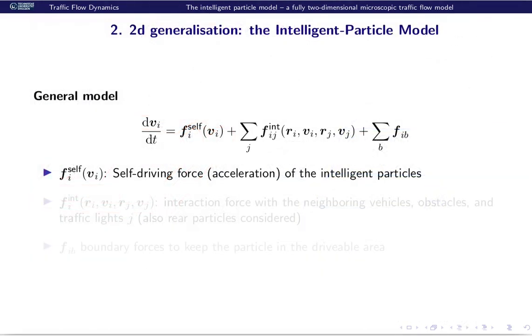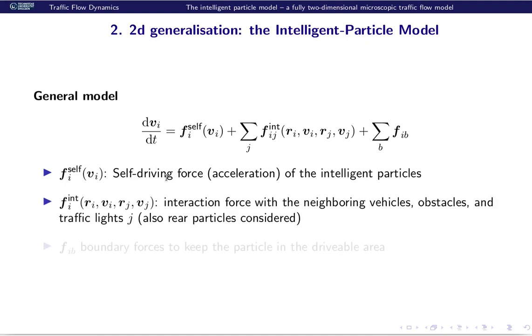The general concept is that of the social force model for pedestrians. It is force-based and we have three force contributions. First, the self-driving force, which is just the acceleration of intelligent particles without any other traffic flow. Second, we have interaction force with the neighboring vehicles, obstacles, traffic lights, basically with any moving or standing objects on the road. And third, we have interactions with the boundaries of the drivable area. All these force contributions are additive.